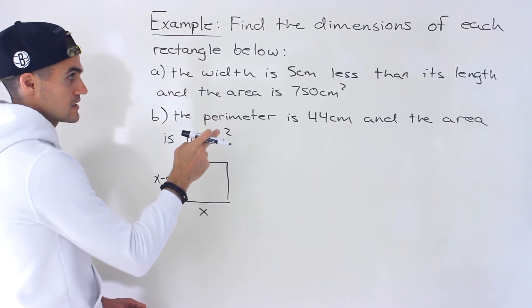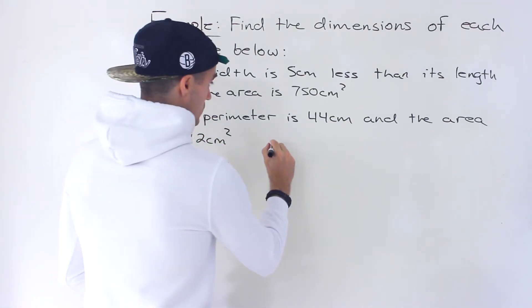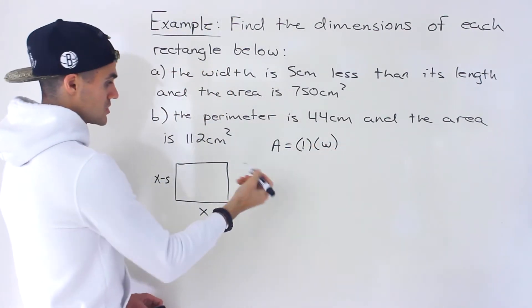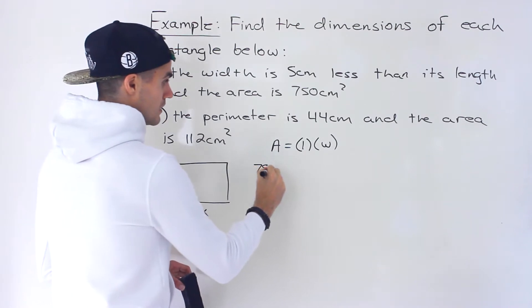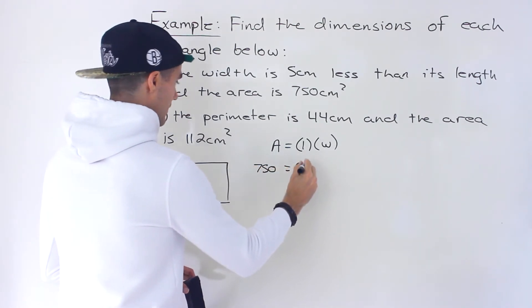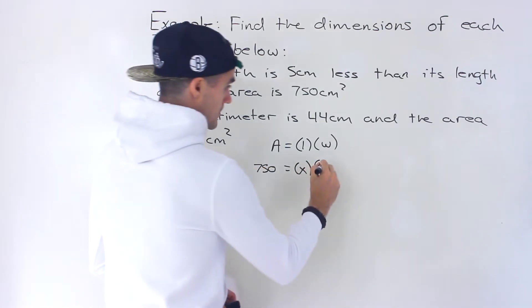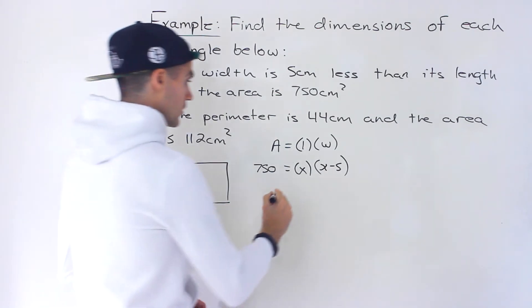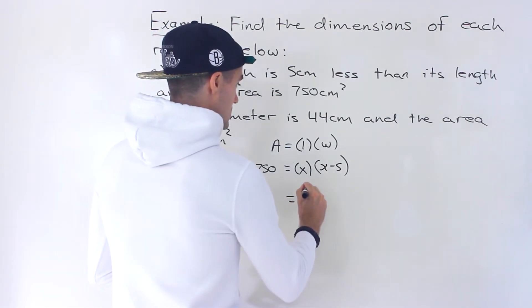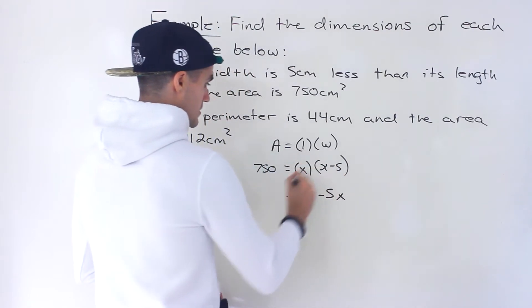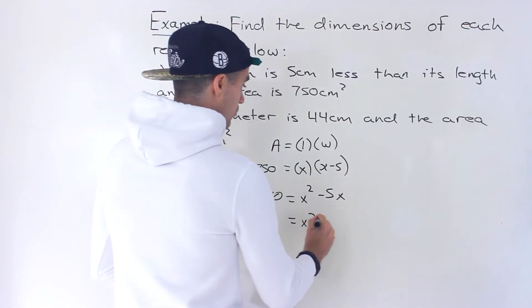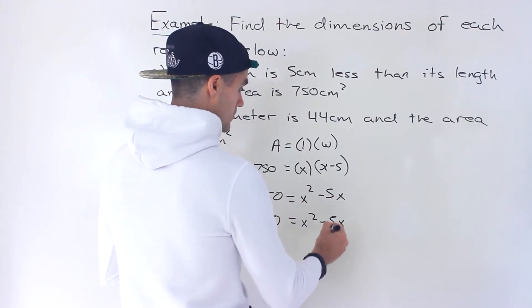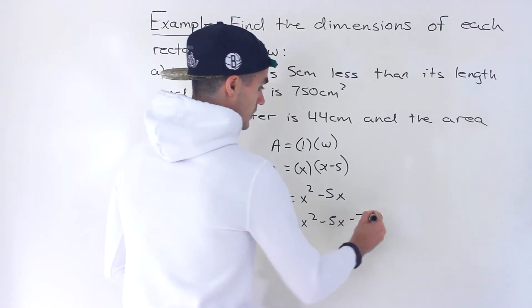We're told that the area is equal to 750 centimeters squared. The area for a rectangle is just length times width. Now we can plug in everything: the area is 750, the length is x, and the width is x minus five. We have an equation in terms of one variable. Expanding and bringing the 750 over, we end up with 0 equals x² minus 5x minus 750.